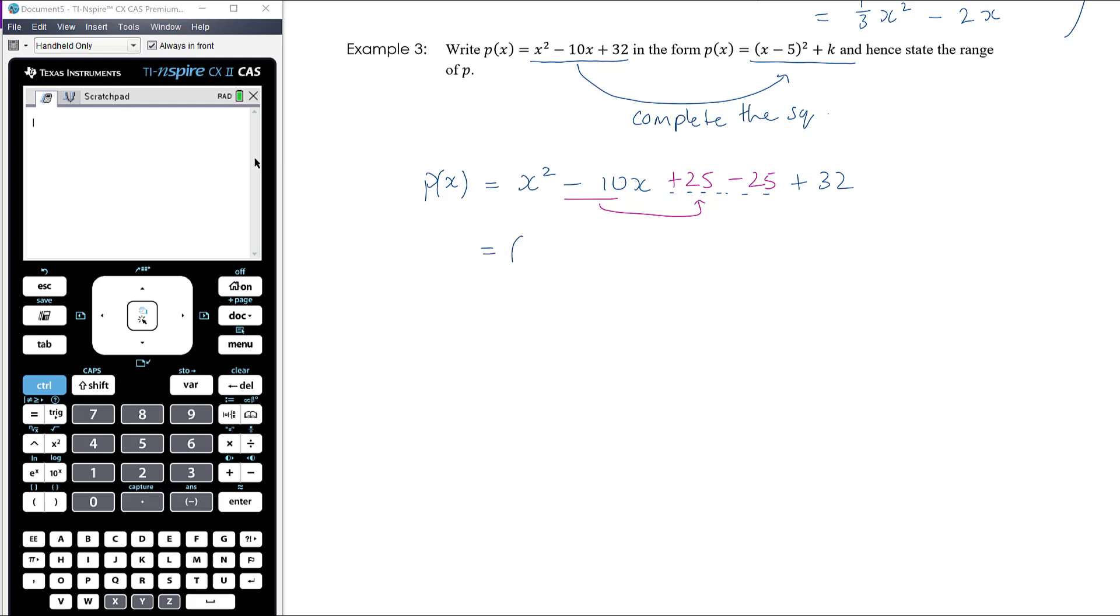So we now have the perfect square: those first three terms, x² - 10x + 25, which is (x - 5)², which we were actually given in the question, and then outside of that we've now got -25 and plus 32, and so therefore we have plus 7.